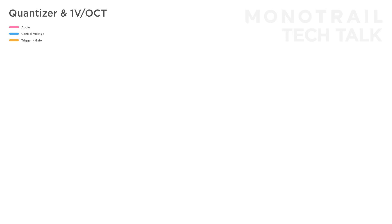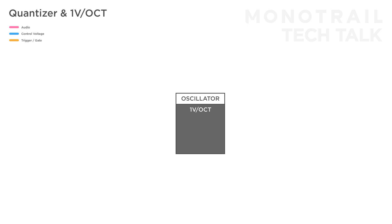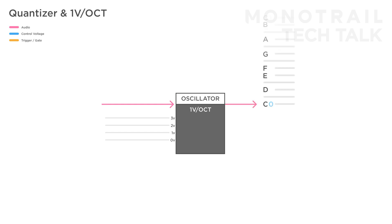To understand the quantizer, we actually have to start with a quick look at the oscillator and the 1V per octave input. On every good Eurorack modular oscillator, you'll find a 1V per octave input. The output frequency of the oscillator responds in a very precise and predictable way to voltages you feed to the 1V per octave input. If you take an oscillator without any input and tune its frequency to output a C, it would still do so if you feed a 0V signal to the 1V per octave input.